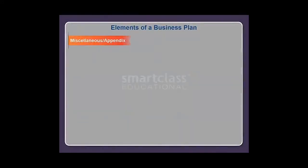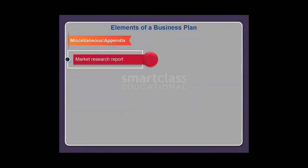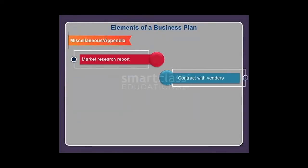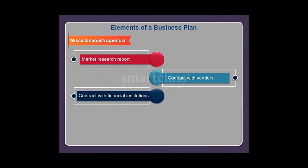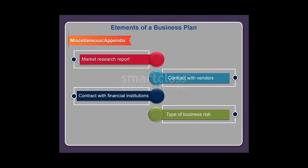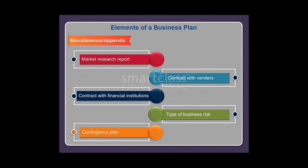The miscellaneous or appendix section includes the market research report, contracts with vendors, contracts with financial institutions, type of business risk, and the contingency plan.